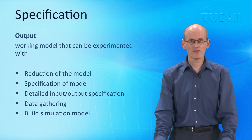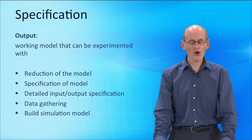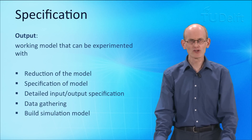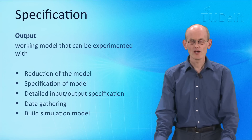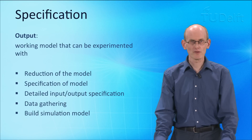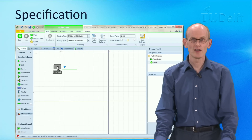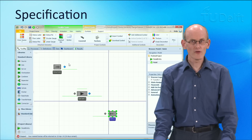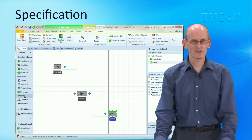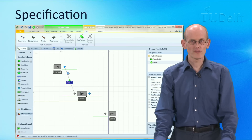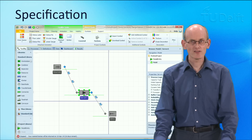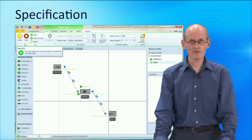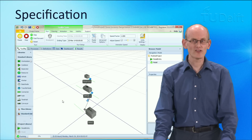The specification, the next step in the model phase, is aimed at leading to a working model that one can experiment with. The first step is reduction of the model, also seen as one of the most difficult steps. Reduction means that we leave out everything that is not needed to complete the model and to run a successful simulation study. We specify the model, gather the data, and build the model. An example of how to build a model is shown here in the simulation modeling package called Simio, often used in university surroundings. We build the model based on standard building blocks available in a library, quickly building up the model with a source that generates entities, a server that serves the entities, and a sink in which the entities disappear.